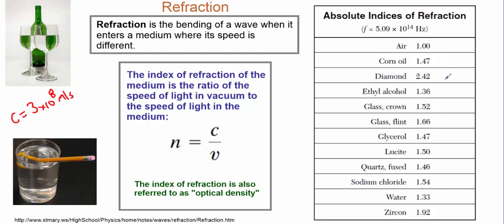And then we see something like diamond. Diamond is very optically dense. It will capture light and slow it down quite a bit. In fact, that's why diamond tends to glimmer and shimmer. That's why people like it. And then we have other things like glycerol, lucite, various different substances that will slow light down based on the material.